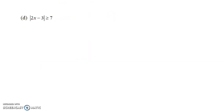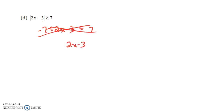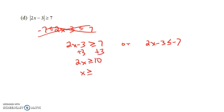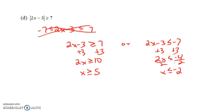Let's do one more example with the absolute value of something greater than or equal to a number. For the absolute value of 2x minus 3 greater than or equal to 7, we do NOT put 2x minus 3 between minus 7 and 7 — that would be totally incorrect. We need an 'or' type of compound inequality: either 2x minus 3 is greater than or equal to 7, or 2x minus 3 is less than or equal to negative 7. Solving the first: add 3 to get 2x greater than or equal to 10, so x is greater than or equal to 5. Solving the second: add 3 to get 2x less than or equal to negative 4, so x is less than or equal to negative 2.